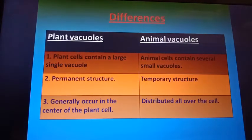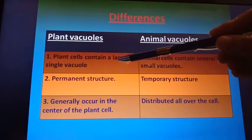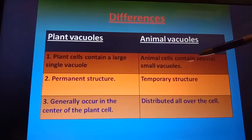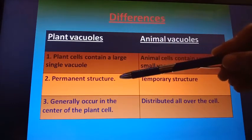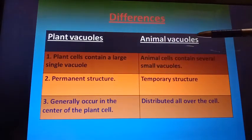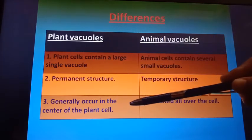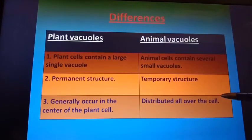The difference between plant vacuoles and animal vacuoles: plant cells contain a single large vacuole; animal cells contain several small vacuoles. The plant vacuole is a permanent structure; animal vacuoles are temporary structures. Plant vacuoles generally occur in the center of the plant cell — that is why they are known as central vacuoles. Animal vacuoles are distributed or scattered all over the cell.